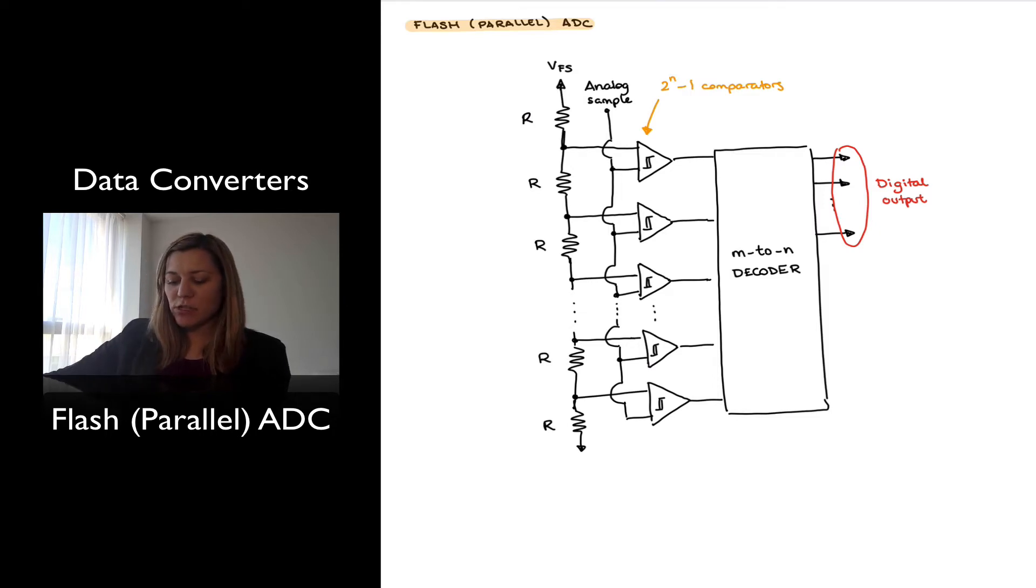As you can see, it consists of a resistor ladder which basically divides the voltage between zero and the full-scale voltage, which I've labeled as VFS. The voltage will go increasing as you go tapping at different points in the ladder. And each one of those voltages is being used as the reference to a comparator, and then the other input of the comparators is being fed with the analog sample.